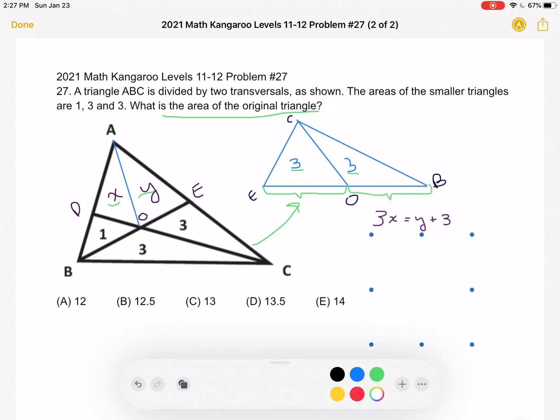So the first equation we're going to come up with using this idea is that 3 times X is equal to Y plus 3. And the way we do that is by looking at this triangle ADC. We already established that DO is one third of OC.